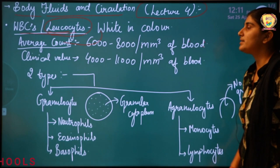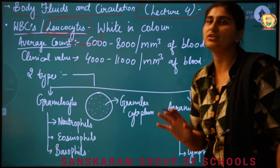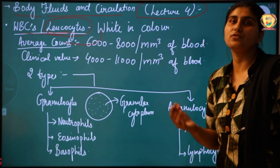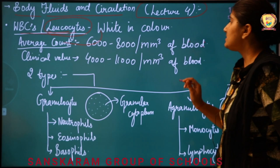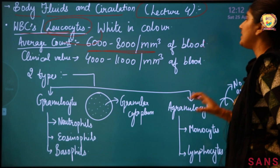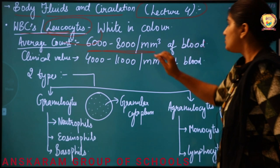We have talked about RBCs — that was 5 to 5.5 million per mm³ of blood for males, and 4 to 4.5 million per mm³ for females. As compared to RBCs, the count of WBCs is very less.